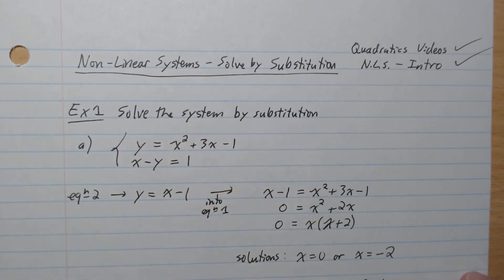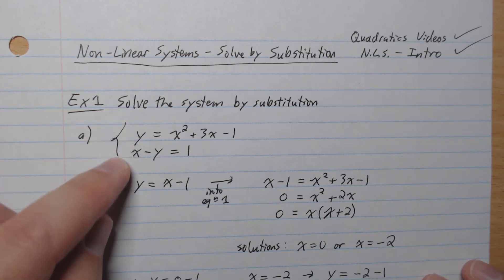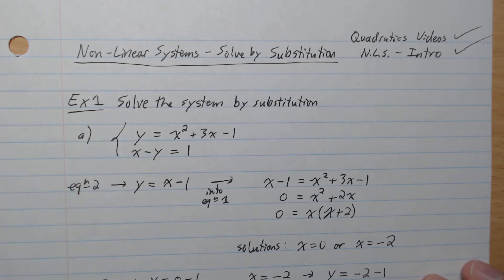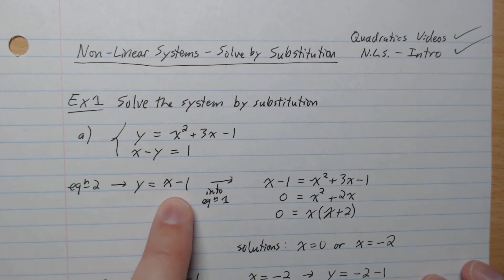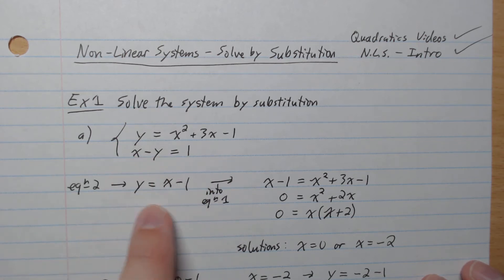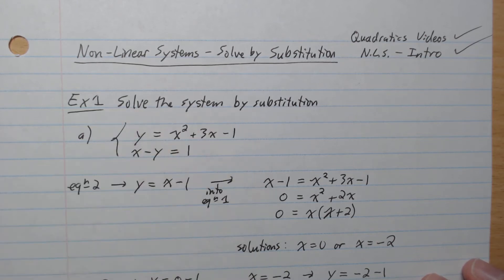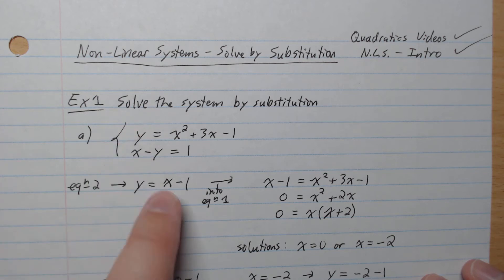Example 1: solve the system by substitution. Here we have our system, our two functions. We're going to rewrite equation 2 as y equals x minus 1, putting the y on one side and 1 on the other side. Then we're going to plug that into equation 1, replacing y with x minus 1.